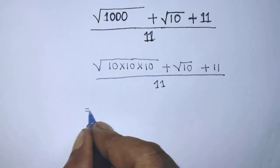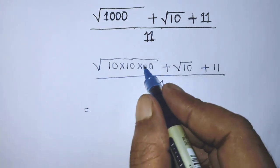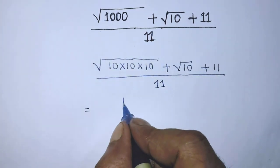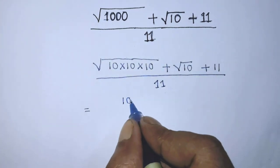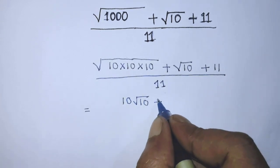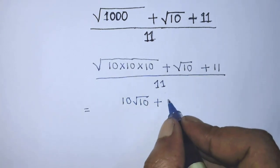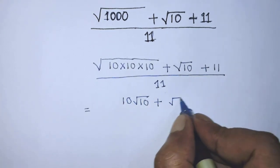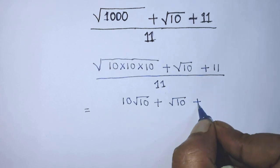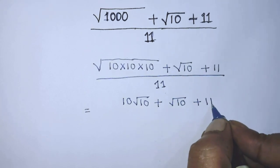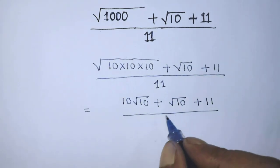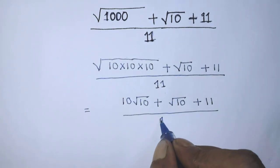After that it will be 10 times square root of 10, plus square root of 10, plus 11 over 11.